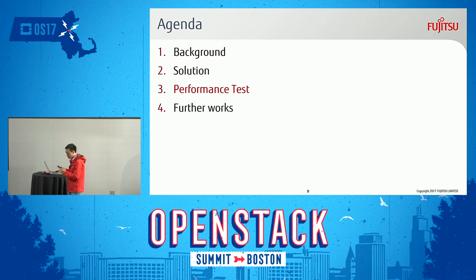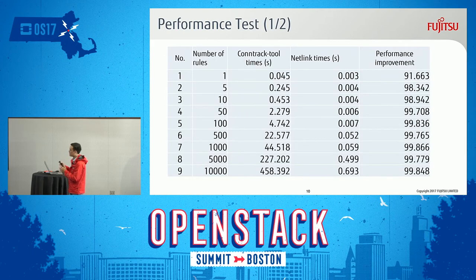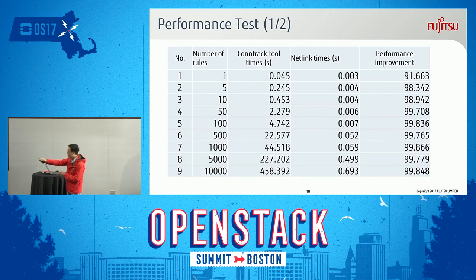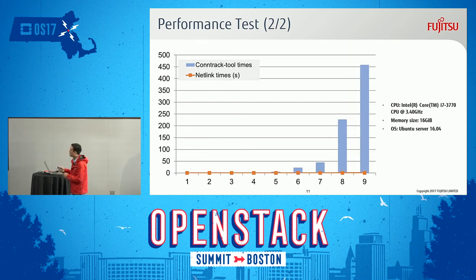The next question is: how much performance improvement does the new netlink solution provide compared to the current implementation? We did a benchmark and test for both the current implementation and the new netlink implementation. In almost every case, the performance improvement is up to 98%. For example, in test case number nine — updating the firewall with ten thousand rules — the time consumed is just around one second. Here is another view of the comparison.